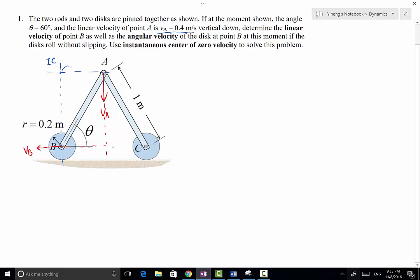Therefore this distance right here is going to be RA relative to IC, and as you can tell, it equals the length of the rod which is 1 meter times cosine 60 degrees, therefore that equals 0.5 meter.